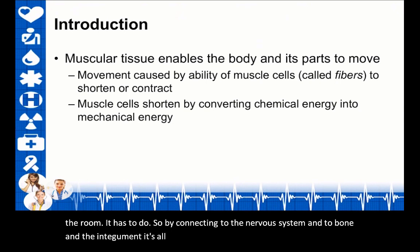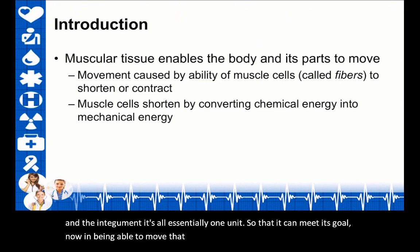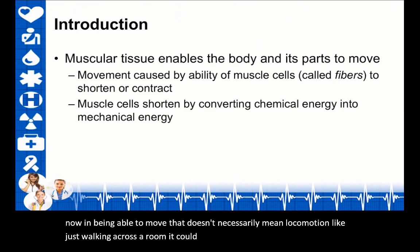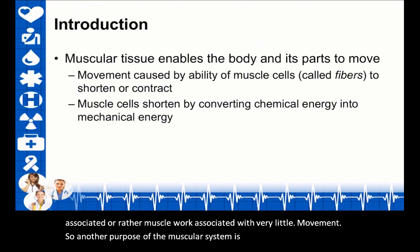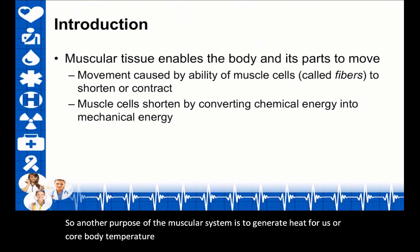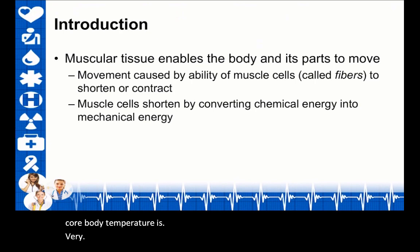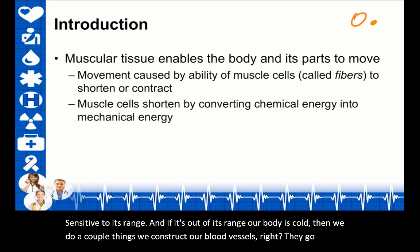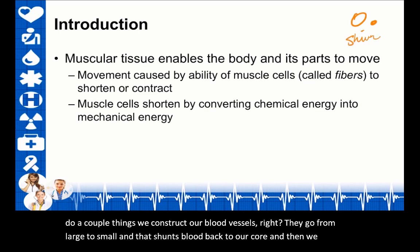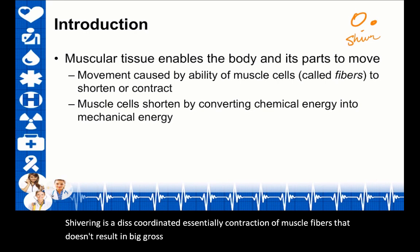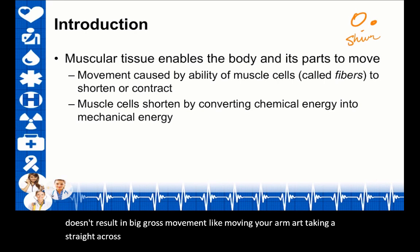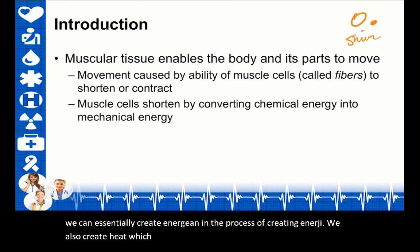By itself, muscle isn't going to get us across a room. It connects to the nervous system, bone, and the integument as essentially one unit. Movement doesn't necessarily mean locomotion—it could be muscle work associated with very little movement. Another purpose of the muscular system is to generate heat. Our core body temperature is sensitive to its range, and if the body is cold, we constrict blood vessels, shunting blood back to our core, and then we shiver.